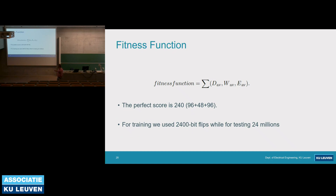The fitness function is based on the combination of bit dependence, avalanche weight, and entropy, summing to 240, and our goal was to get as close to 240 as possible. You cannot train for all possible 96-bit inputs (2^96 possibilities), so we used Monte Carlo simulation with 2,400 bit flips. We empirically found this to be sufficient — equivalent to testing on a large dataset with 2,400 million bit flips. All results in the paper and this presentation are based on large-scale testing.